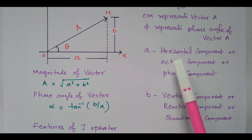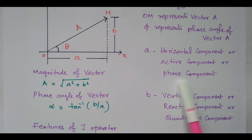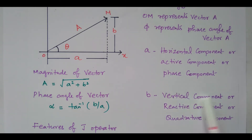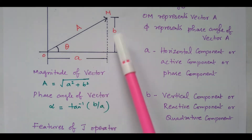A is the real term, also called the horizontal or active or phase component. B is the vertical component, or reactive component, or quadrature component. Quadrature means 90 degrees. It is the imaginary part. So A is the real term and B is the imaginary term.